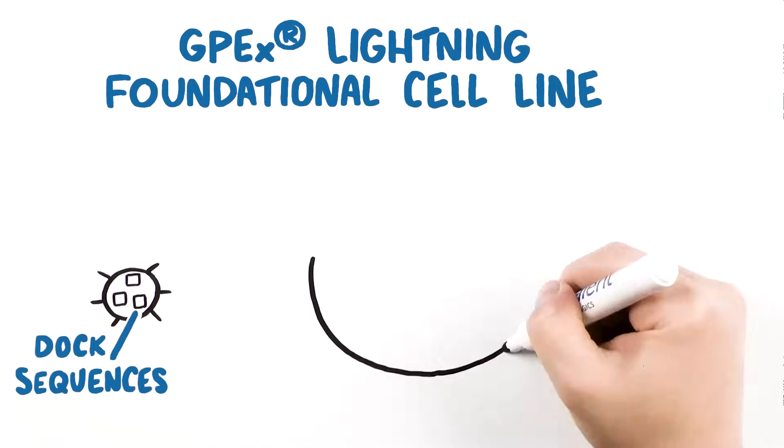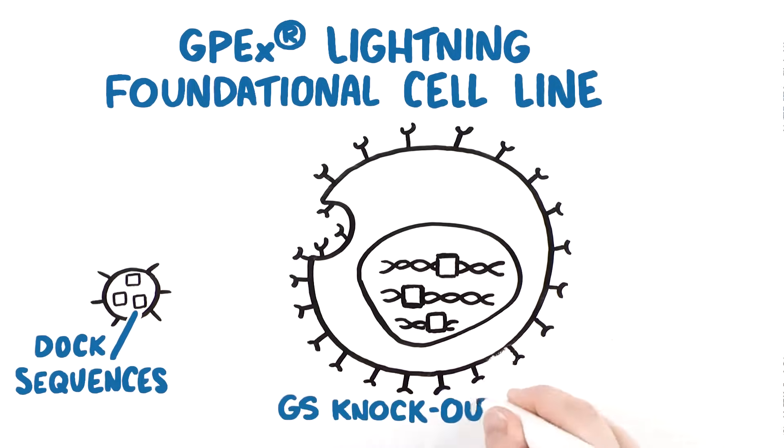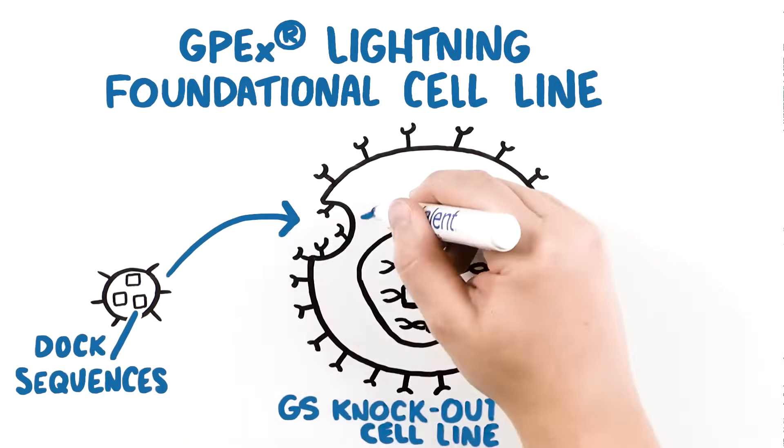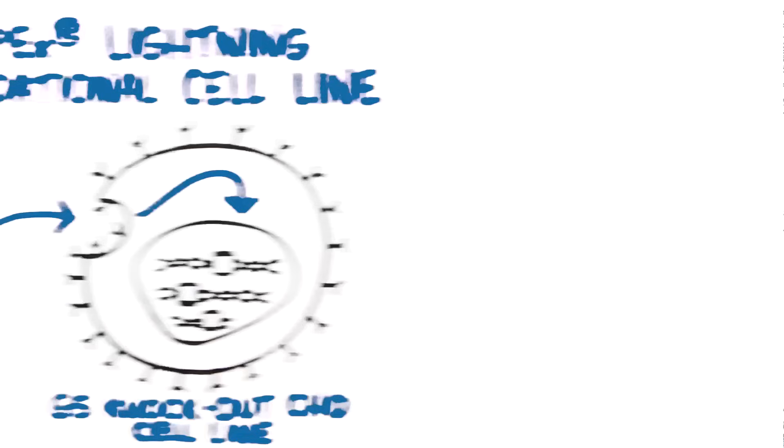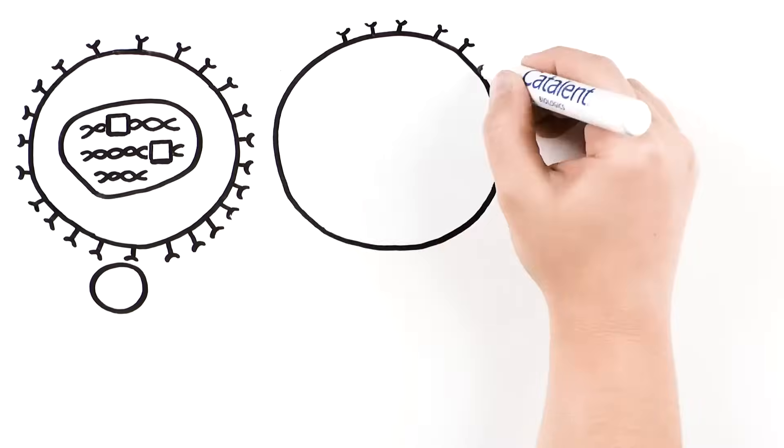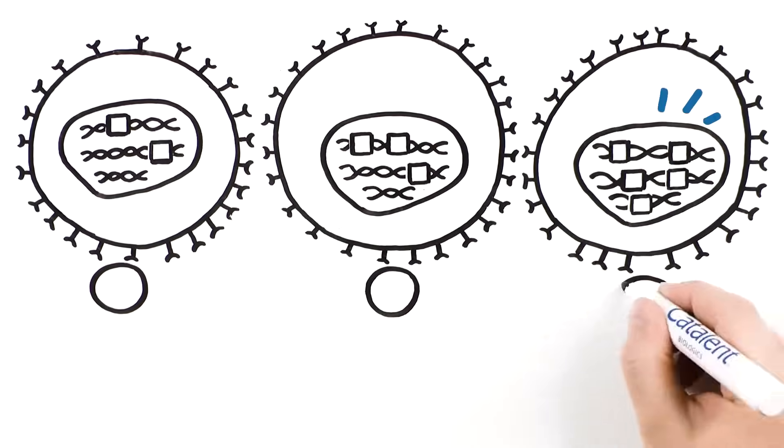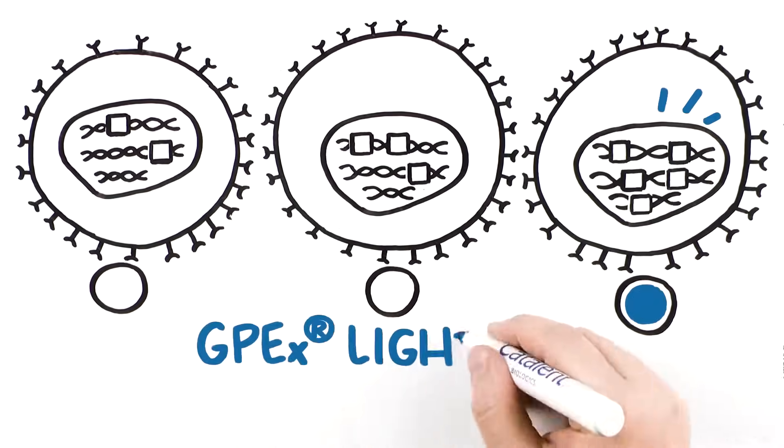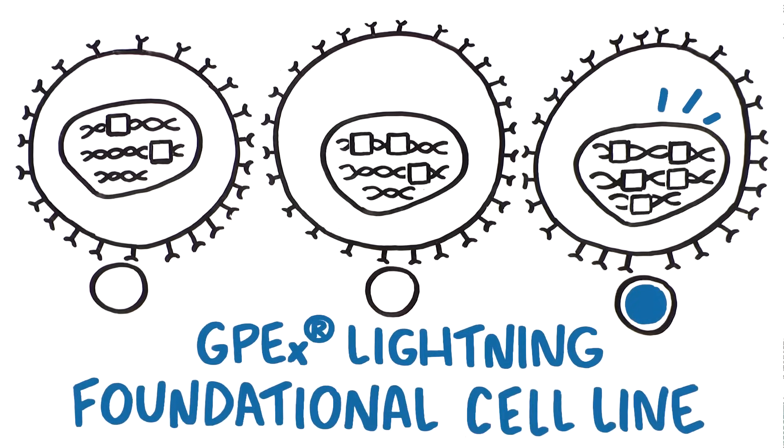To develop the GPX Lightning foundational cell line, DOC sequences were introduced into a glutamine synthetase knockout CHO cell line, using the unique GPX gene insertion process. The clonal cell line with the best growth characteristics and greatest number of DOCs was selected as the foundational cell line for GPX Lightning technology.